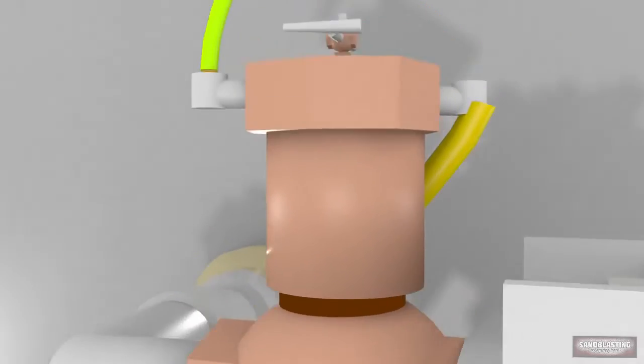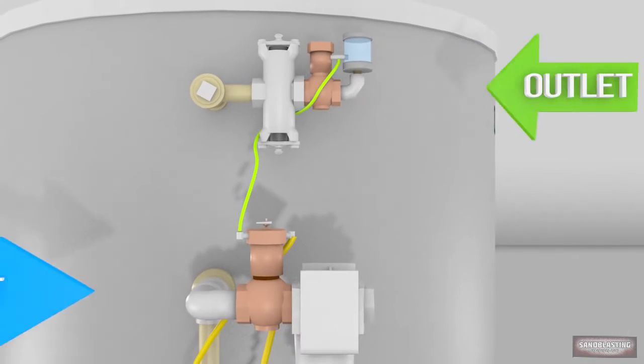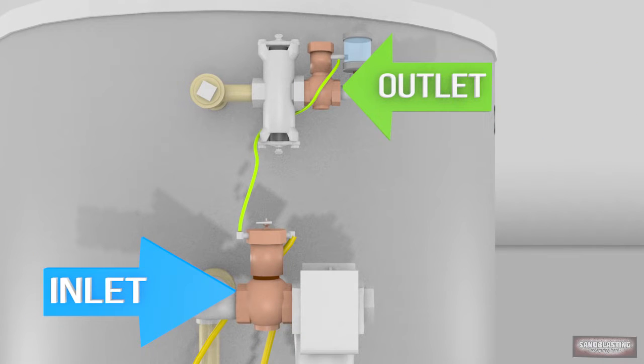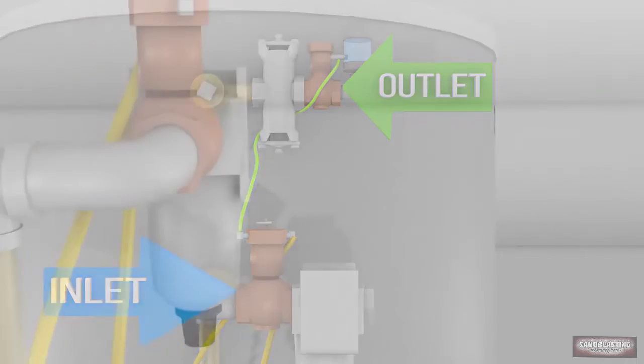The Inlet and Outlet Valves. These valves are very intricate, expensive components of the blast machine. They monitor the inflow and outflow of air and determine whether or not the pot is pressurized.